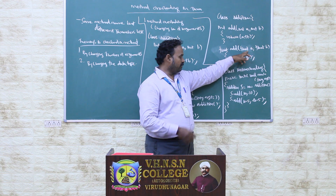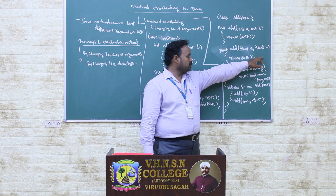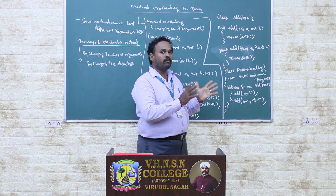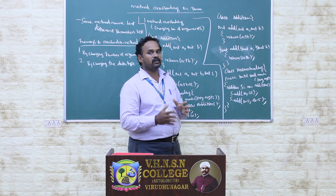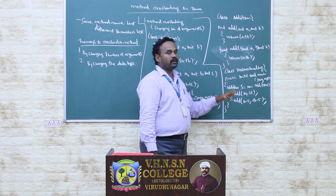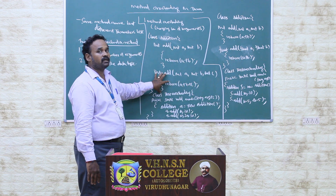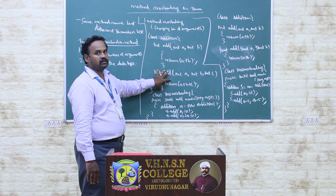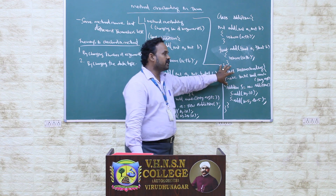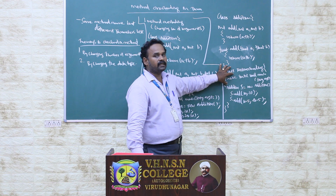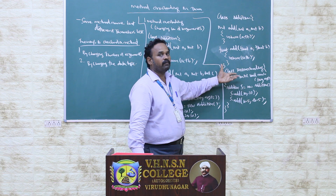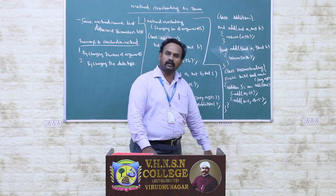Here, A is assigned 10.5 and B is assigned 20.5, so the output is 10.5 plus 20.5, which is 31. The result 31 is printed. In summary: by changing the number of arguments, we can overload a method in Java. By changing the data types, we can also overload a method in Java. Thank you.